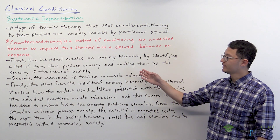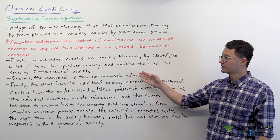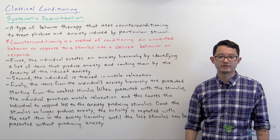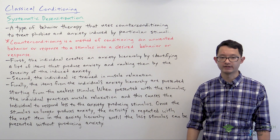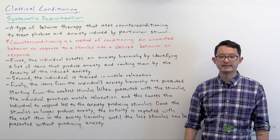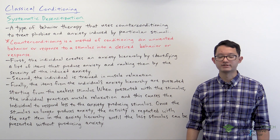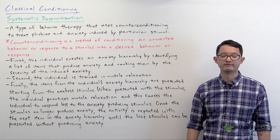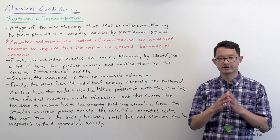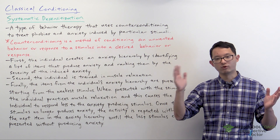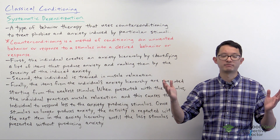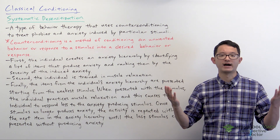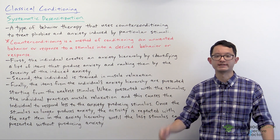Systemic desensitization works in three steps. In the first step the individual creates what is called an anxiety hierarchy. They will list a number of items that produce anxiety and then rank the items by the severity of the induced anxiety. When done, they'll have a list where one end has the item that produces the least anxiety and the other end has the item that produces the most anxiety.